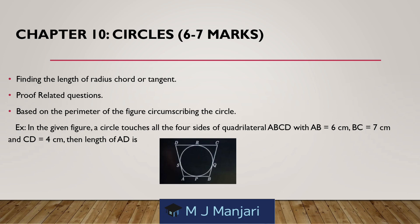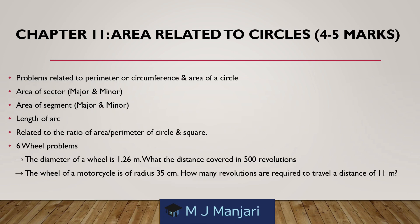Chapter 10: Circles — weightage 6 to 7 marks. Topics: finding the length of radius, chord or tangent; proof-related questions based on perimeter or figures circumscribing the circle. Chapter 11: Areas Related to Circles — weightage 4 to 5 marks. Topics: problems related to perimeter or circumference and area of a circle; area of sector (major and minor); area of segment (major and minor); length of arc; ratio of area or perimeter of circle and square; and wheel problems — for example, if the diameter of a wheel is 1.26 metres, what distance is covered in 500 revolutions; or if the wheel of a motorcycle has a radius of 35 cm, how many revolutions are required to travel a distance of 11 metres.